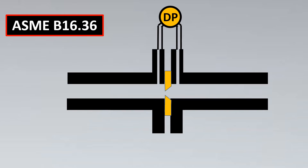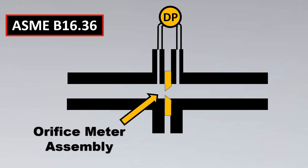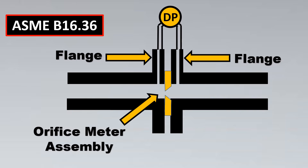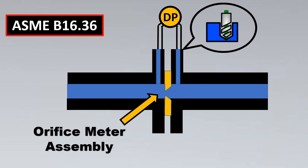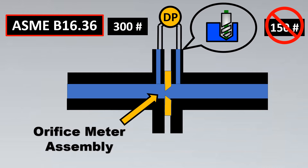Now let's look at the most interesting part: ASME B16.36, used for orifice meter assemblies. Orifice flanges are a little different from regular flanges because the liquid flowing through has to be measured when a differential pressure is created. These flanges have to be physically drilled, and when you drill a flange you reduce its mechanical integrity by putting a hole through it. Because of this, 150 pound rating is not part of B16.36 — it starts directly from 300 pound rating, as these flanges are specially designed to accommodate such drilling.